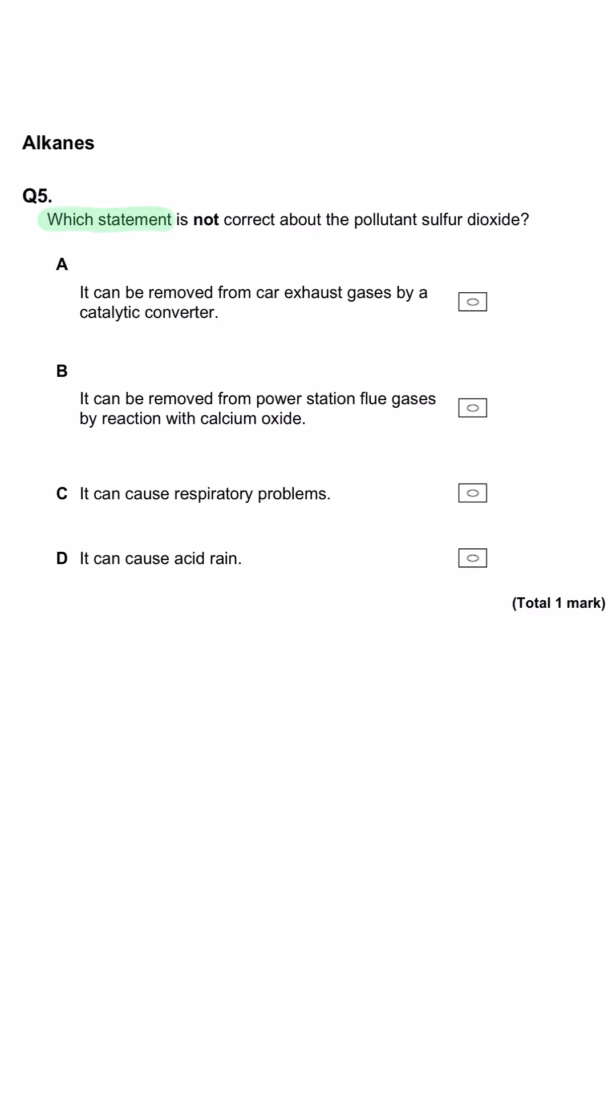Which statement is not correct about the pollutant sulfur dioxide? It can be removed from car exhausts by a catalytic converter.